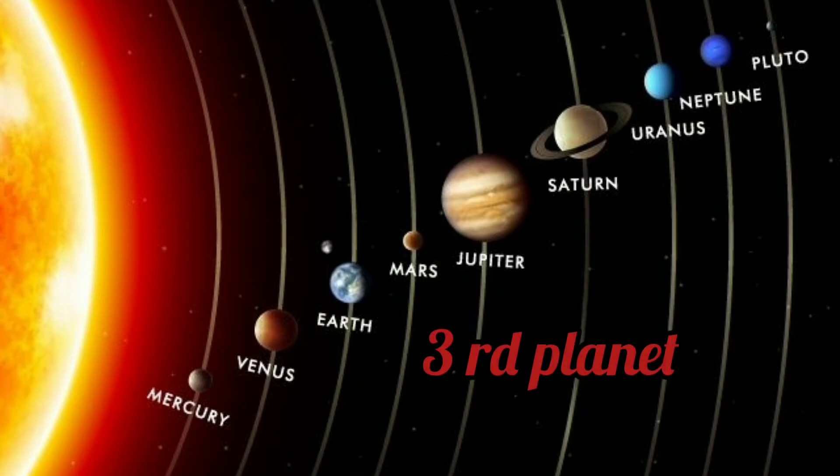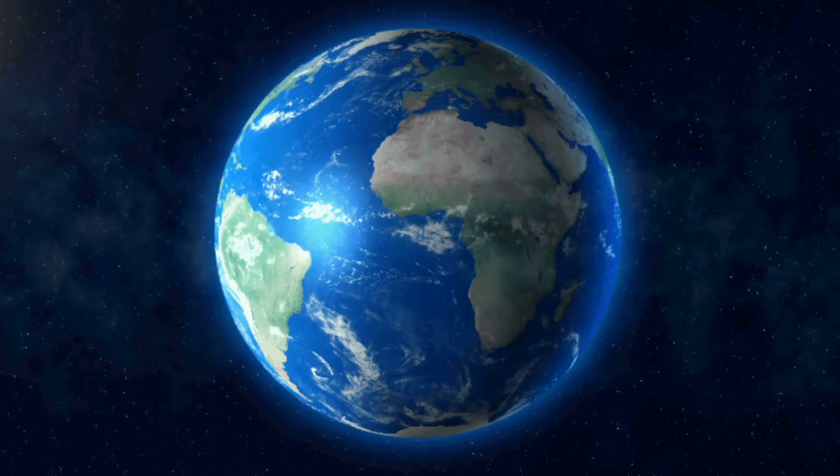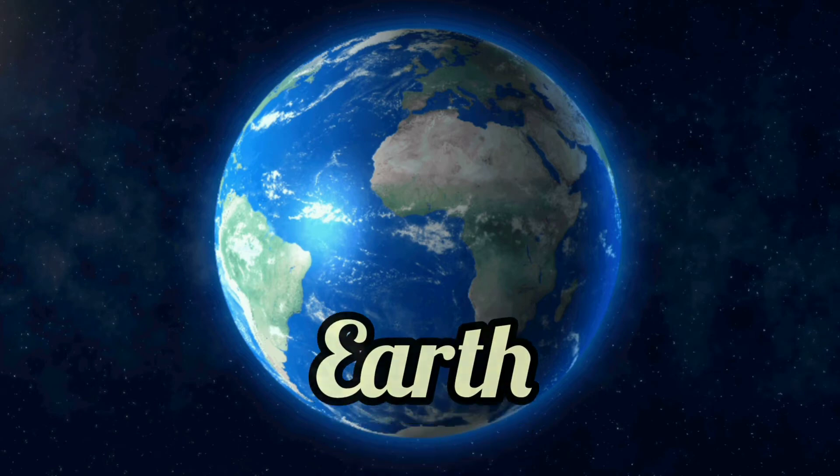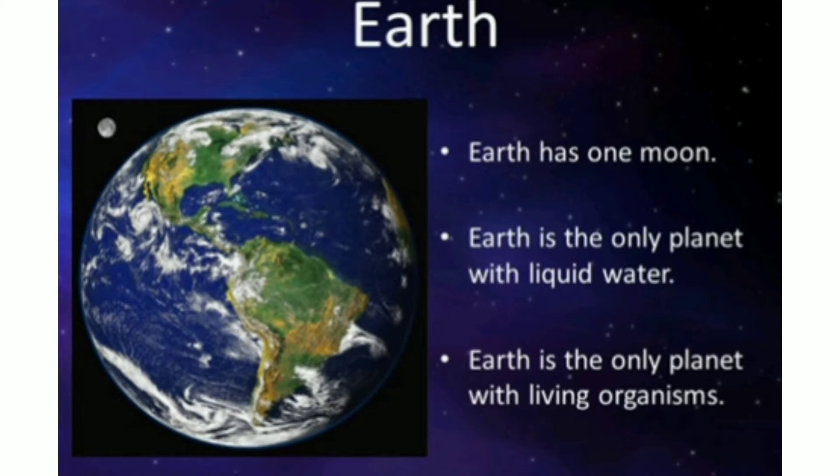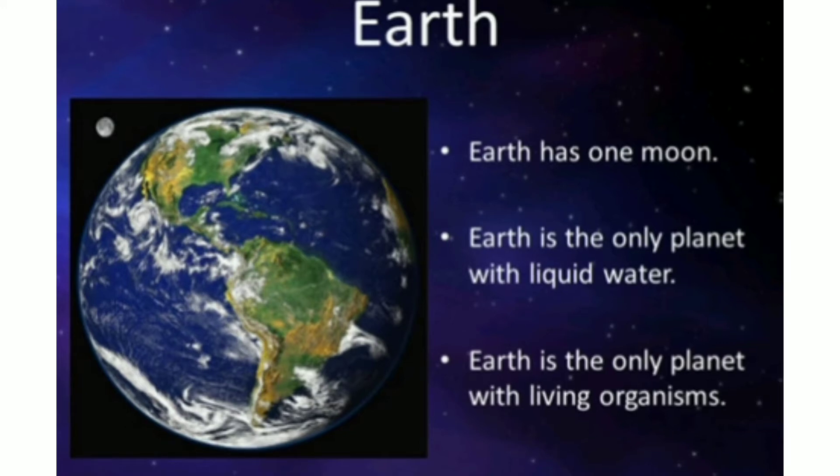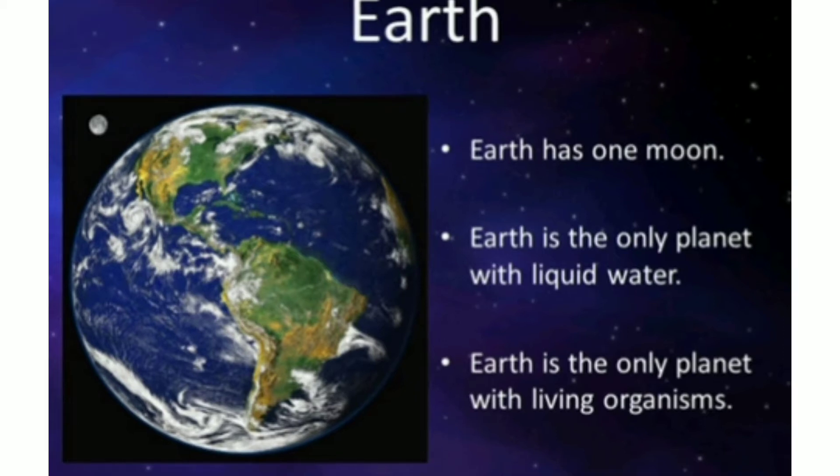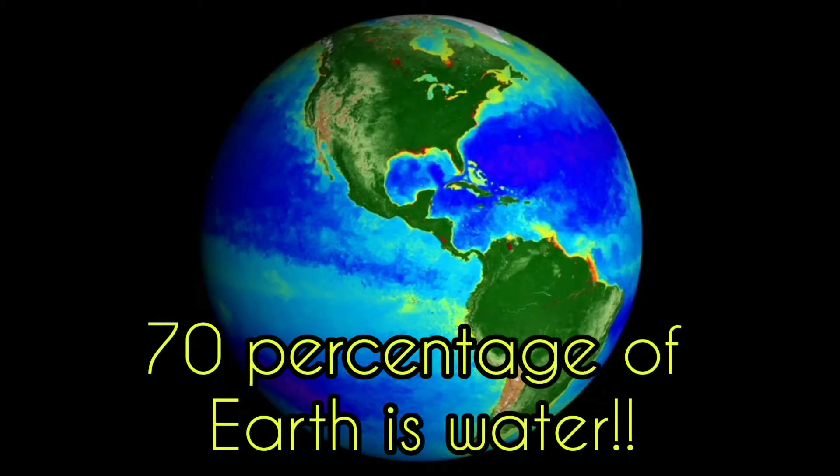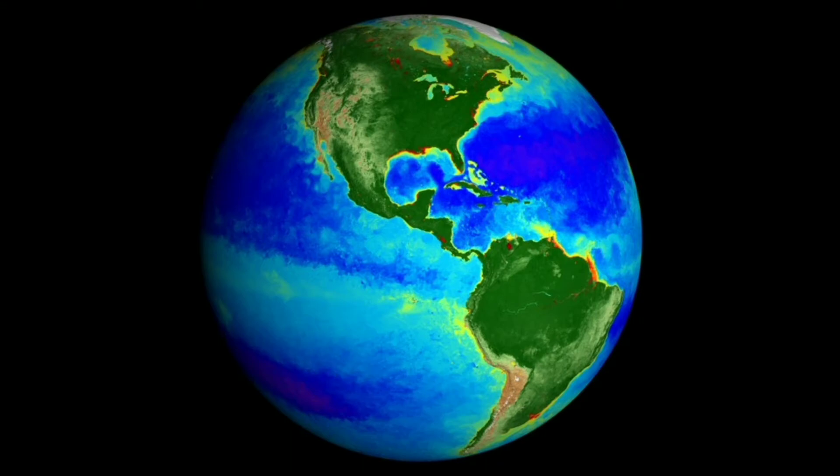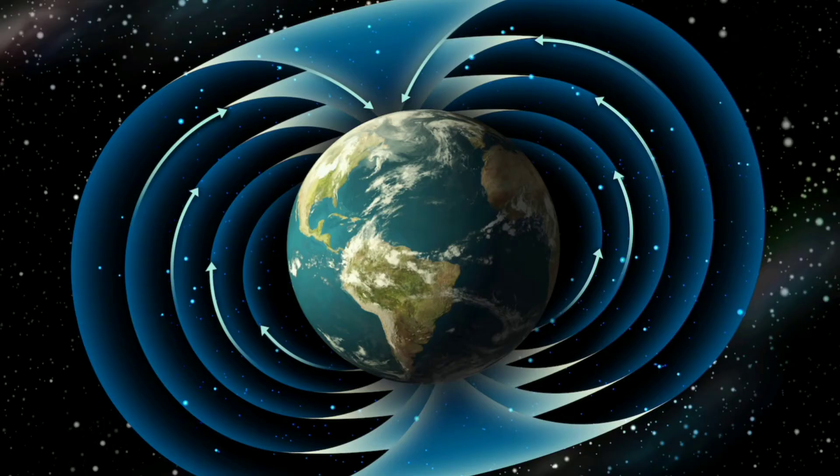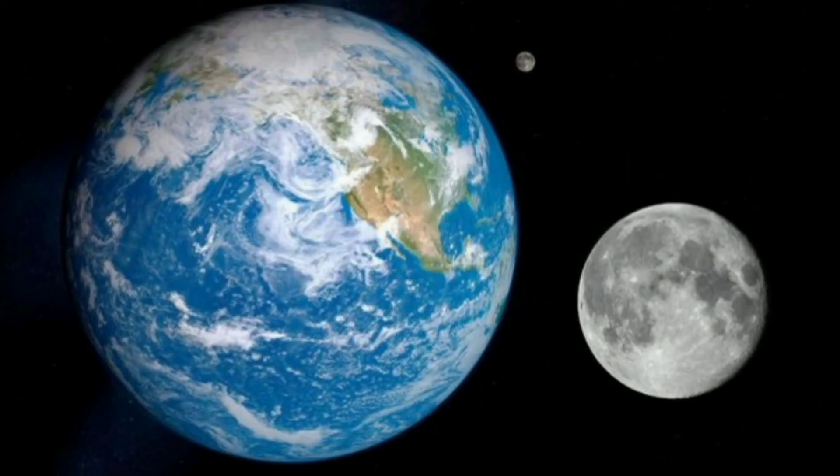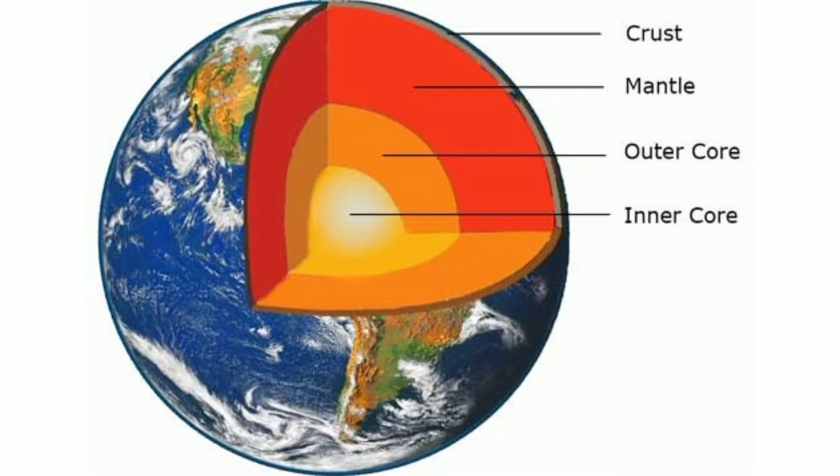We can move on to the third planet. This is our home planet, Earth. Earth has only one moon. Earth is the only planet with liquid water. Earth is the only planet with living organism. Earth has got more than 70% water. Earth has got a strong magnetic field. Earth is the closest planet to the sun which has a moon. Earth has got three layers.